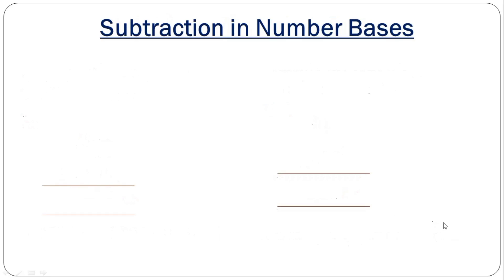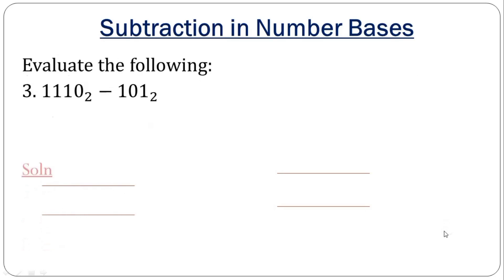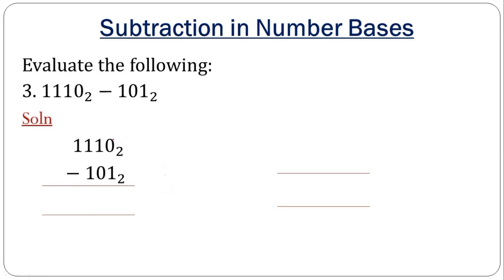Now we go over to subtraction in number bases. We arrange like our normal subtraction. In subtraction you have to be careful — the only difference is in borrowing. For instance, 0 minus 1 cannot go, so I borrow 1 from the next position. Recall that when you are in base 10, if you borrow 1 it becomes 10. If you are in base 2 and you borrow 1, it becomes 2. Whenever you borrow during subtraction, the borrowed value becomes equal to that base.